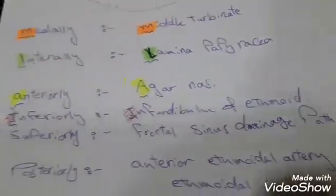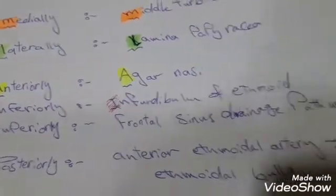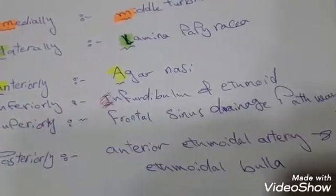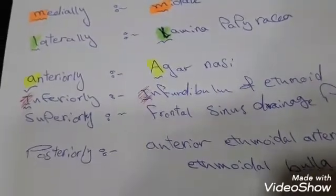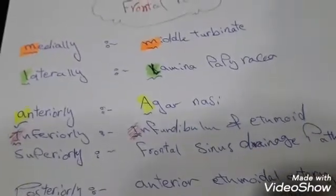drainage pathway. Posteriorly, anterior ethmoidal artery and ethmoidal bulla. The posterior boundary gets the anterior ethmoidal artery. So, to recap: medially, middle...